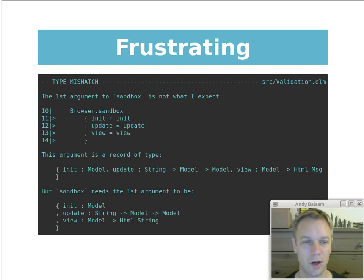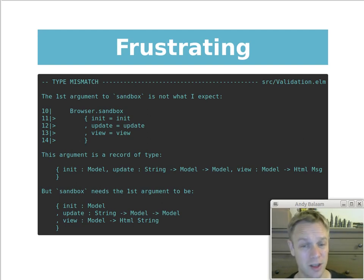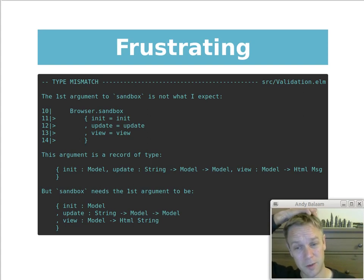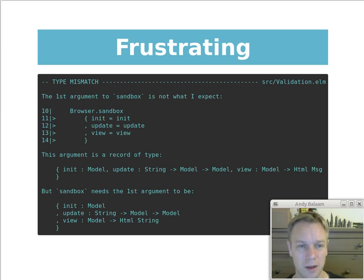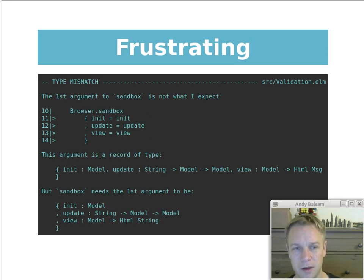In Elm you don't get mysterious runtime errors like 'undefined doesn't have this property' because it's always dealing with the type of thing it thought it was dealing with. You're not allowed to break that rule. So you don't get those mysterious errors, but in exchange you get a whole load of pain at compile time — before your program compiles. And you're like, oh, I don't know what this is — but eventually you figure it out and it becomes clear that you were just doing something wrong.